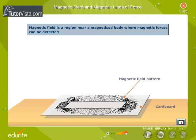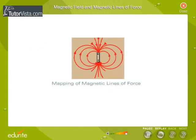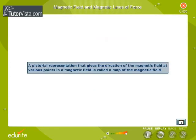A magnetic field is represented graphically by lines of force. A pictorial representation that gives the direction of the magnetic field at various points is called a map of the magnetic field.